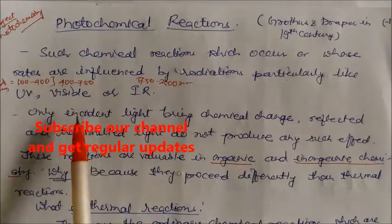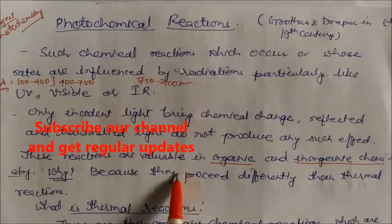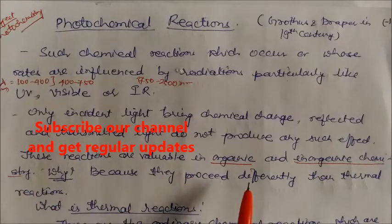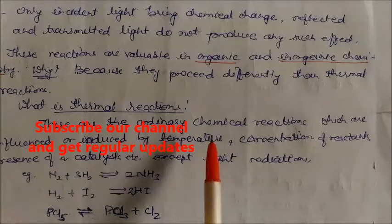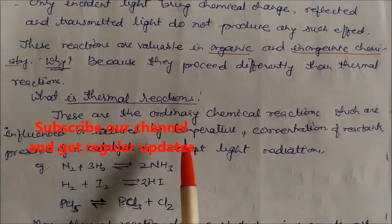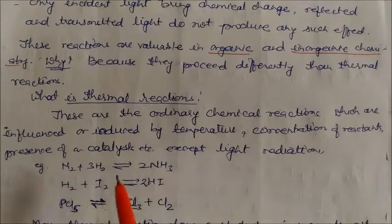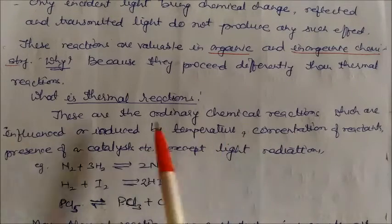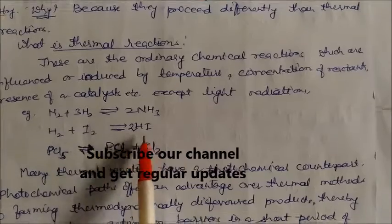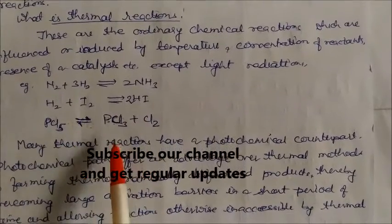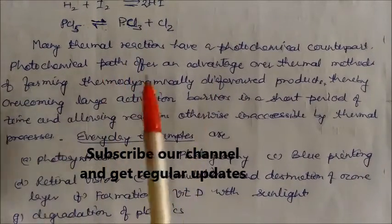These reactions are valuable in organic and inorganic chemistry because they proceed differently than thermal reactions. Thermal reactions are ordinary chemical reactions influenced by temperature, concentration of reactants, or presence of a catalyst — except light radiation. Examples of thermal reactions: nitrogen reacting with hydrogen to give ammonia, hydrogen reacting with iodine to give hydrogen iodide, and PCl5 undergoing a reverse reaction to give PCl3 and Cl2.